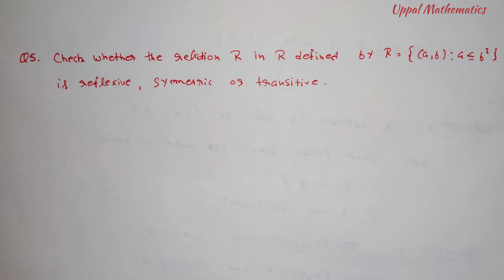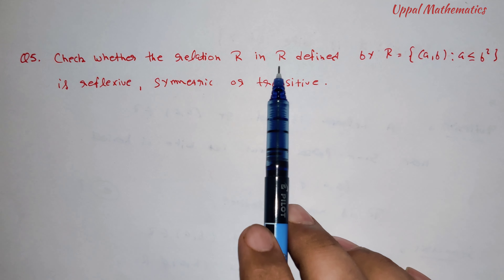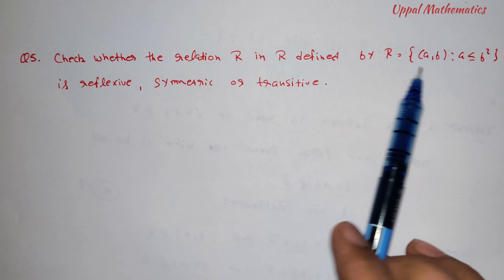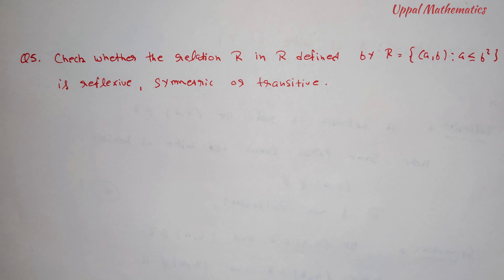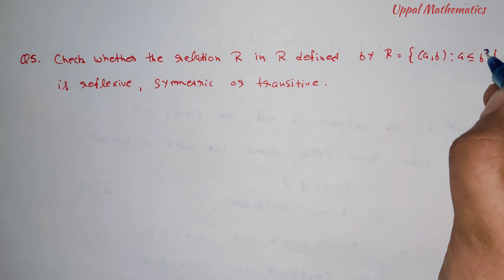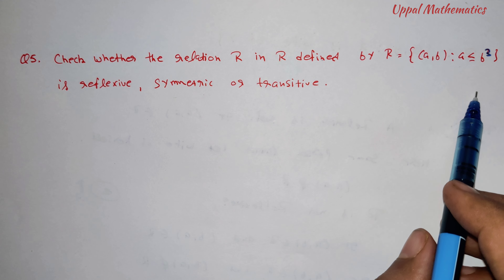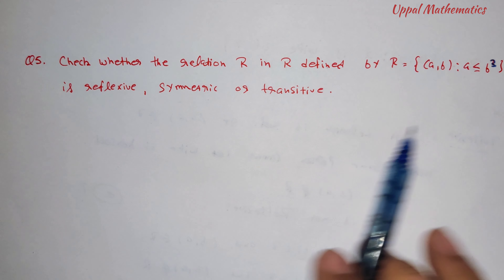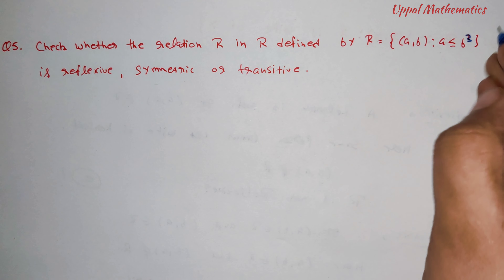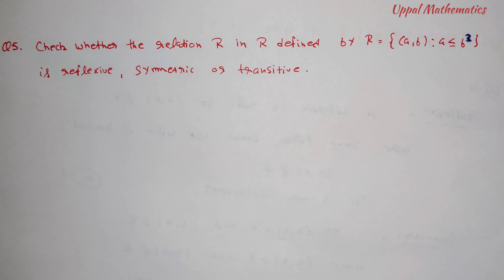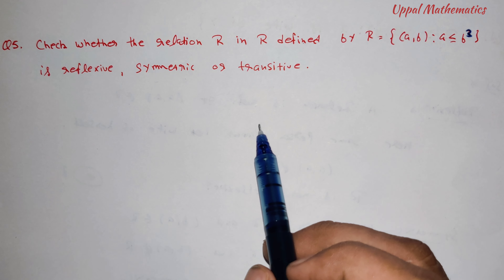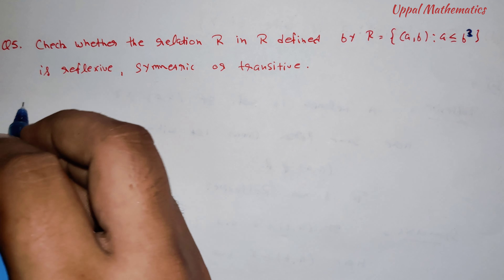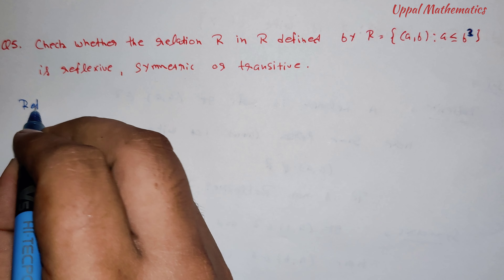Question number 5: check whether the relation R in real numbers defined as A less than or equal to B cubed is reflexive, symmetric, or transitive. We need to check all three properties. Since we are dealing with all real numbers, we need to be careful.